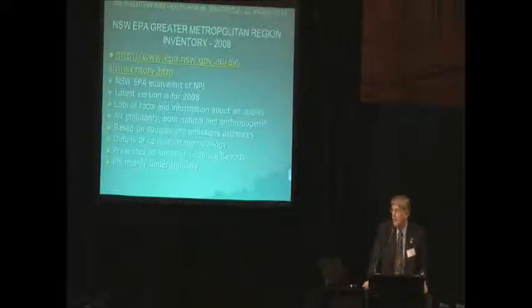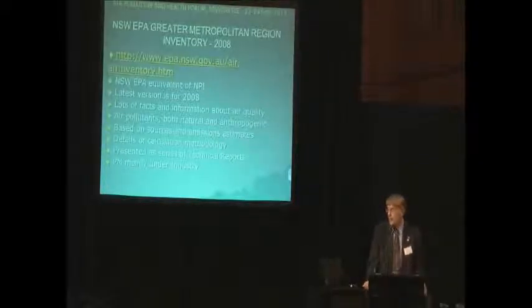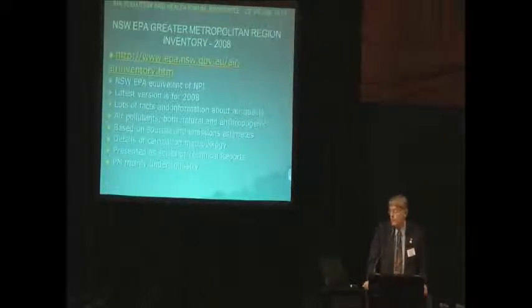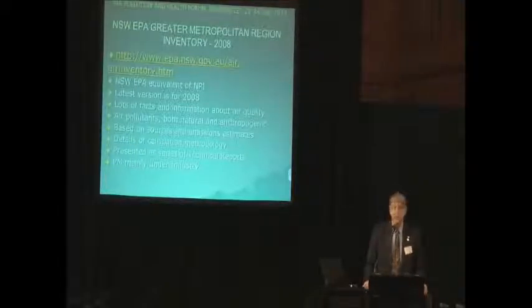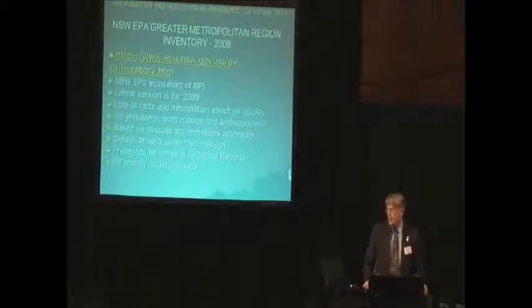At the state scale, there is the Greater Metropolitan Regional Inventory. The latest version is from 2008 and was released a few months ago — Jeff mentioned this in relation to his results. This is the New South Wales EPA equivalent of the NPI. There are lots of facts and information on this website about air quality: definitions of air pollutants, both natural and anthropogenic. I encourage people to explore it — it's very well written for public information. It provides sources, emissions estimates, and details of calculation methodologies presented as a series of technical reports. Particulate matter is mainly covered under the industry section.